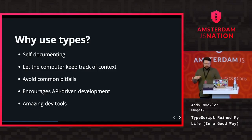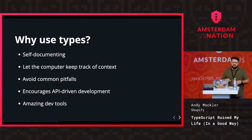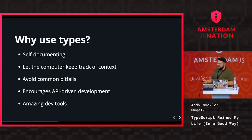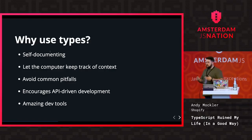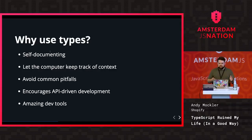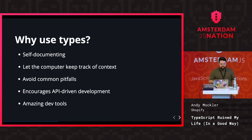Types encourage API-driven development, meaning you really focus on your API as you go. In JavaScript, it's easy to push through an options hash and slowly add things until you're passing 15 or 20 options without documentation. With TypeScript, you have to be explicit about what's getting passed on that options object, so it helps you pay attention to your API and how your code interfaces with other parts of your application.